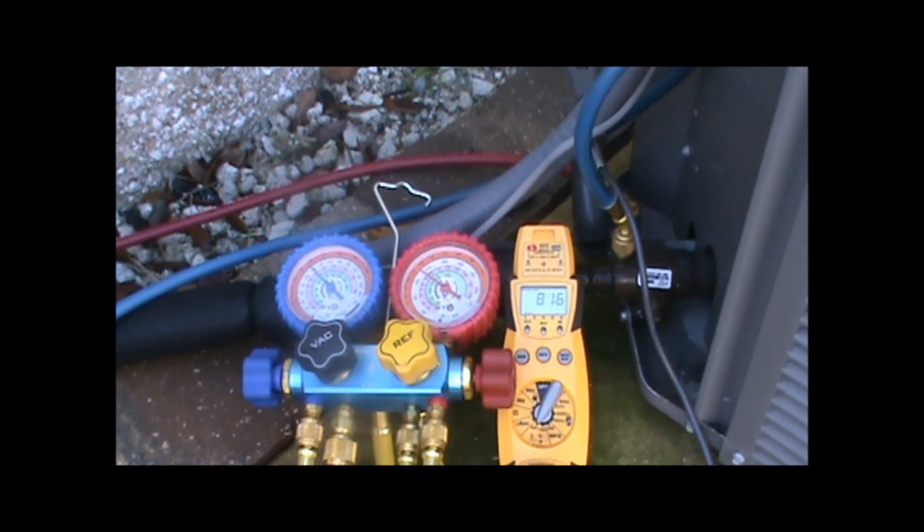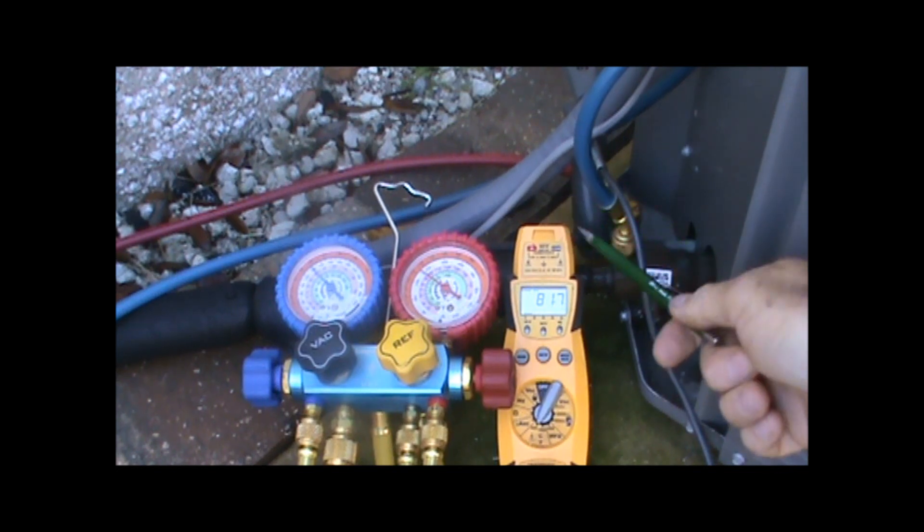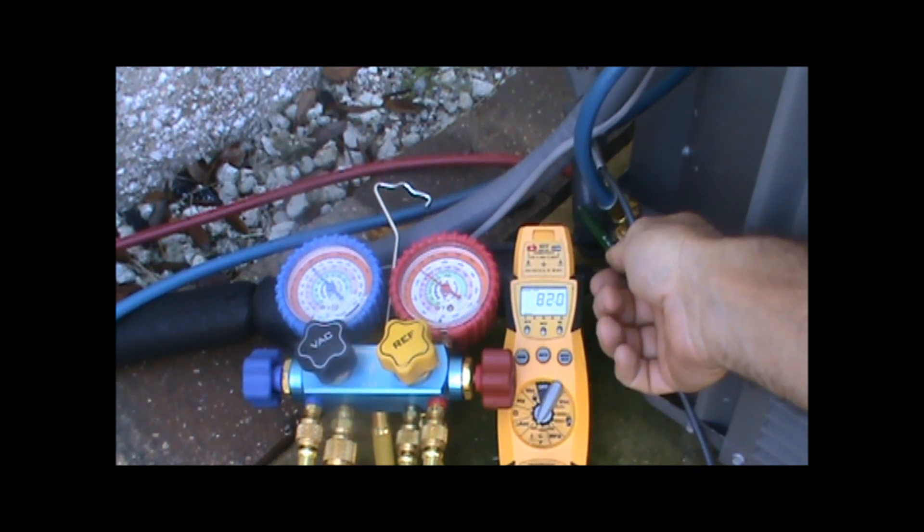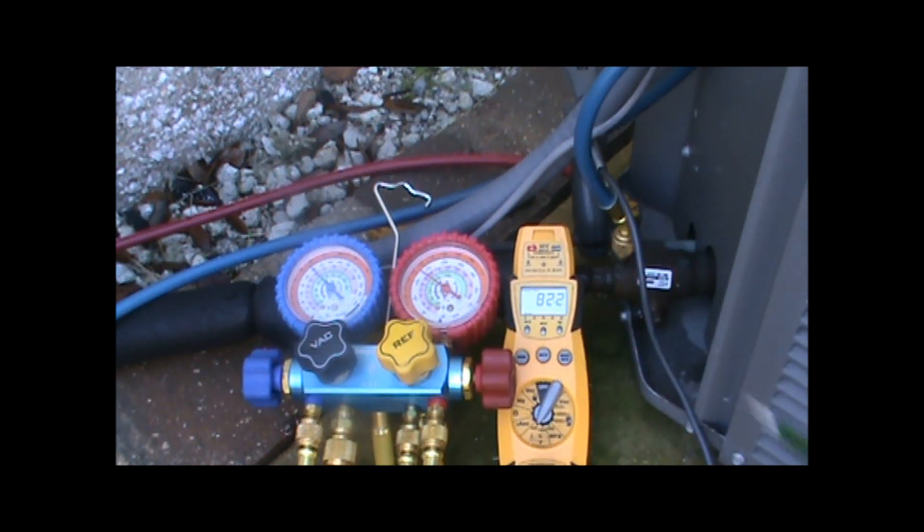Sub-cooling. We have the gauges hooked up. The temperature probe is clamped onto the high side liquid line, measuring the temperature of the refrigeration piping as it leaves the condenser. If you remember from our lessons, we don't use our gauges so much to measure pressure as to determine the saturation temperature of the refrigerant.